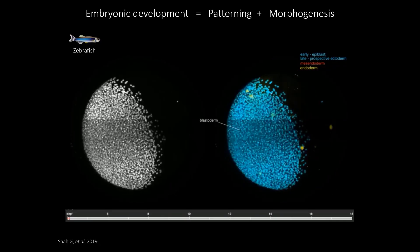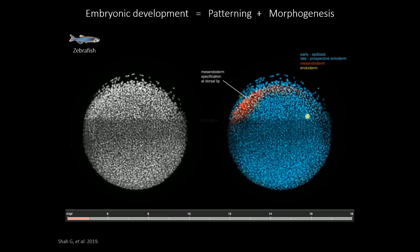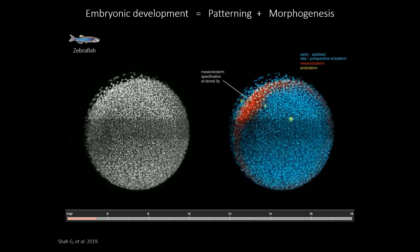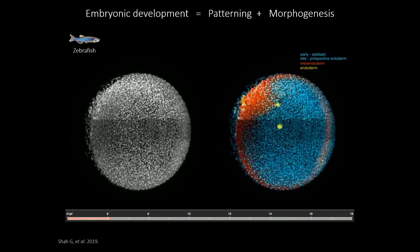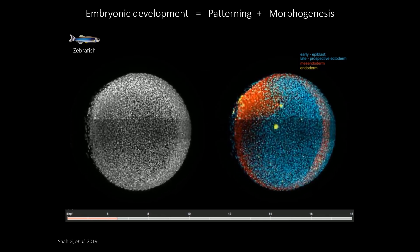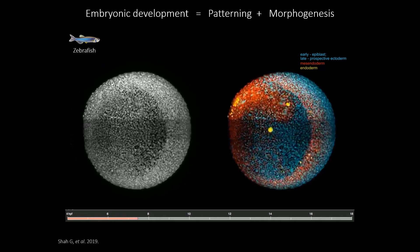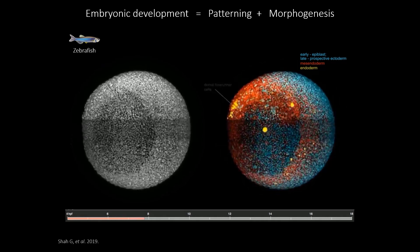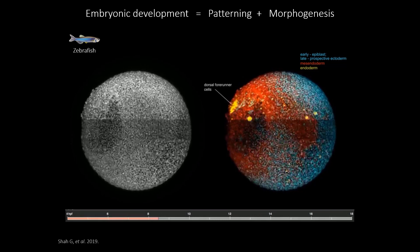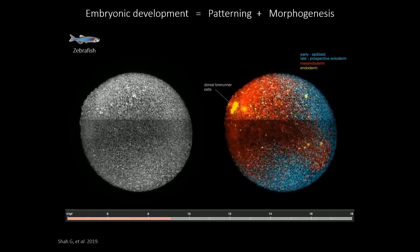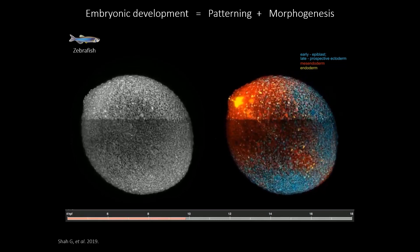This movie really illustrates two key features of early embryonic development: it's a multi-scale process — things are happening at the subcellular, cellular, and tissue scale — to completely reshape and pattern these embryos, but it's also a really dynamic process.